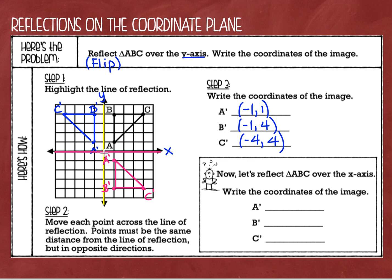Point A prime is one to the left and down one, so it is positive one and negative one. Point B prime is one to the left and down four, so it's positive one and negative four. Point C prime is four to the right and down four, so it is positive four and negative four. So there are our first two examples of reflections — one across the y-axis and one across the x-axis.